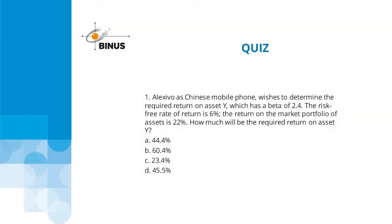To close this session, here is a quiz. Alexifo, a Chinese mobile phone company, wishes to determine the required return on asset Y, which has a beta of 2.4. The risk-free rate of return is 6% and the return on the market portfolio of assets is 22%. What is the required return on asset Y? Options: A) 44.4%, B) 60.4%, C) 23.4%, D) 45.5%. That is the end of today's session. Thank you for your attention and see you in the next session.